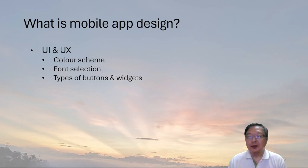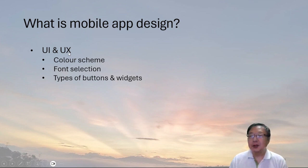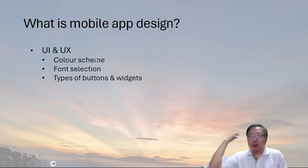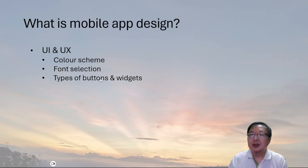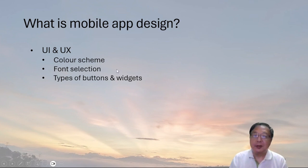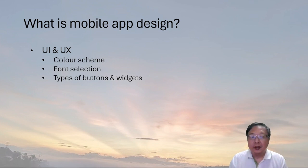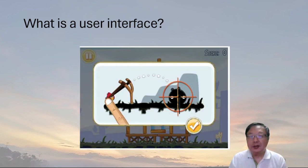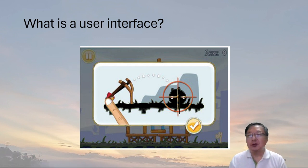What is mobile design? There are two big components: the user interface, which is the UI, and the user experience, which is the UX. Mobile app design encompasses both UI and UX. Designers are responsible for the overall style of the app — like the color scheme, the font selection, the types of buttons and widgets. User interfaces are very important because they represent the presentation of your app to the customer or user.